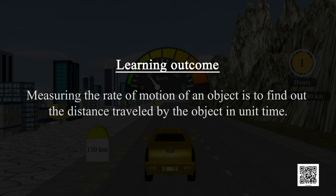Learning outcome: measuring the rate of motion of an object is to find out the distance travelled by the object in unit time.